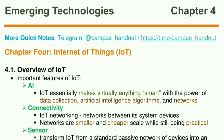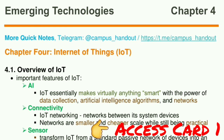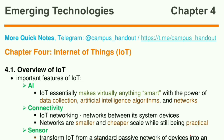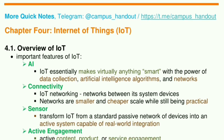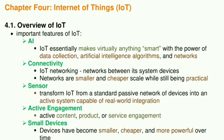Emerging Technologies, Chapter 4. If you need the PDF version of this short note, contact us on Telegram at campus_hand_out. Chapter 4: Internet of Things, IoT. Overview of IoT, important features of IoT, AI.